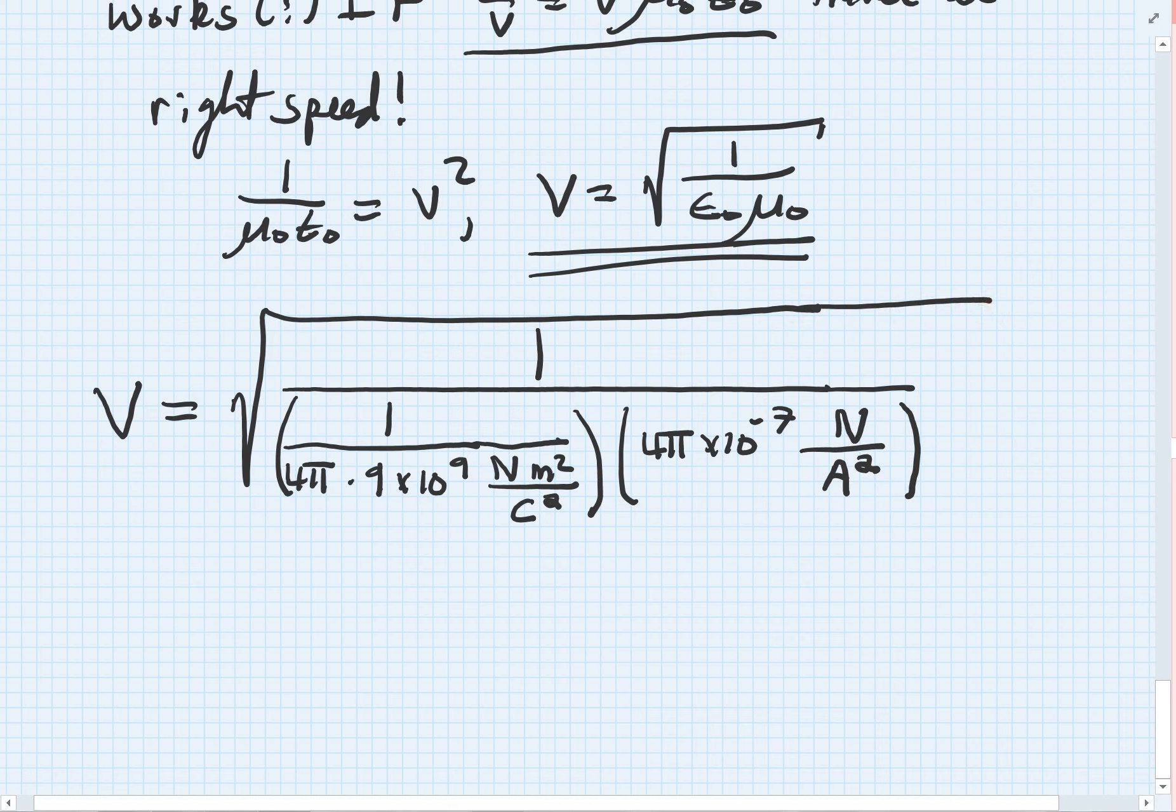Now, let's see at least how we're doing in terms of our dimensions. You'll notice that the newtons cancel with the newtons. That is very good. Notice that what I have here is 1 over 1 over meters squared. So, the units on that are going to give me meters squared on top, but I have a square root, so it's going to be meters on top.